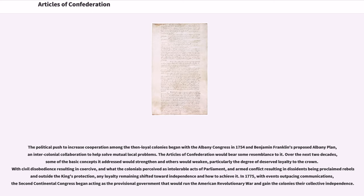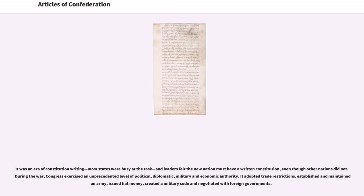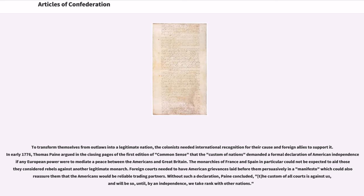It was an era of constitution writing; most states were busy at the task, and leaders felt the new nation must have a written constitution. During the war, Congress exercised an unprecedented level of political, diplomatic, military, and economic authority. It adopted trade restrictions, established and maintained an army, issued fiat money, created a military code, and negotiated with foreign governments to transform themselves from outlaws into a legitimate nation.